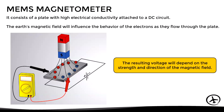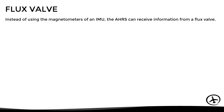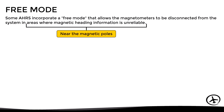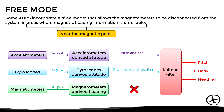In aviation, there is a significant problem with this type of magnetometer, since they are affected by electromagnetic interference from avionics or engines. To solve this, instead of using the magnetometers of the IMU, the AHRS can receive information from a remote flux valve, which we have already discussed in the video about the remote indicating compass. Just like in a remote indicating compass, some AHRS incorporate a free mode that allows the magnetometers to be disconnected from the system in areas where magnetic heading information is unreliable, such as near the magnetic poles. In this case, heading information will only be provided by the MEMS gyros.